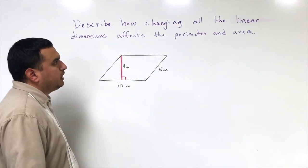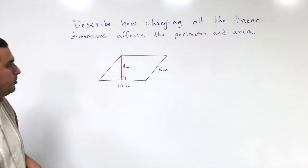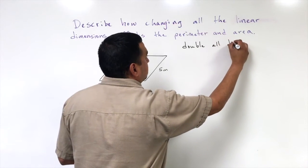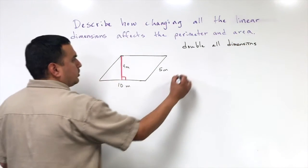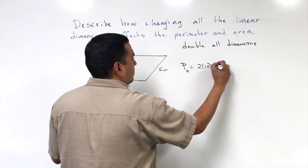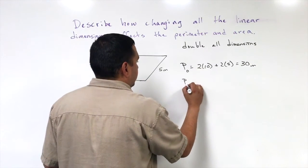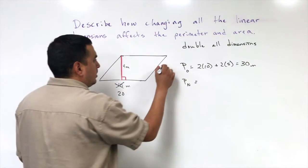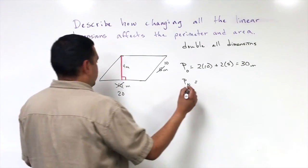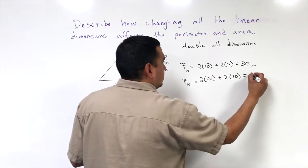Now we're going to look at what happens if I change all of the dimensions by the same number. We're going to double all the dimensions. The perimeter of the original with sides 10 and 5 is 2 times 10 plus 2 times 5, which is 30 meters. If I double all my dimensions, my 10 becomes 20 and my 5 becomes 10. The new perimeter is 2 times 20 plus 2 times 10, which gives me 60 meters.